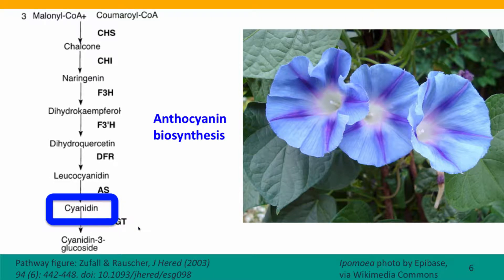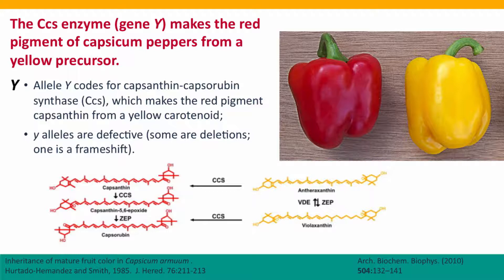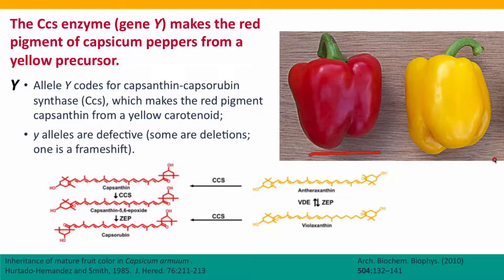A pigment pathway that I particularly like is the pathway that controls the colors of capsicum peppers — the bell peppers that are very widely available all over the world. These are the sweet peppers, not hot peppers. The wild type, the normal color for these peppers, is this deep red color. But if you've been in a produce market lately, you'll have seen that peppers come in a range of other colors: yellow ones, orange ones, ones that are almost white, and purpley-brown ones — and they're all bell peppers.